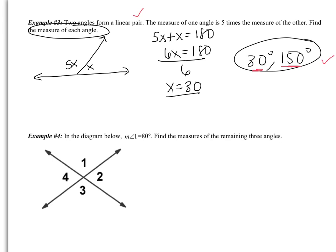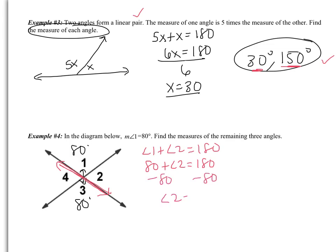Looking at example 4: angle 1 is 80 degrees — find the remaining three angles. Angles 1 and 3 are vertical, so they are congruent; if 1 is 80 degrees, then 3 is also 80 degrees. This is a straight angle, so angles 1 and 2 are supplementary: 80 plus angle 2 equals 180, so angle 2 equals 100 degrees. Since angles 2 and 4 are vertical, angle 4 is also 100 degrees.